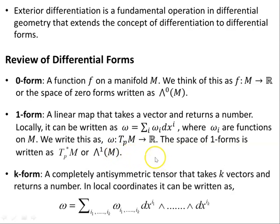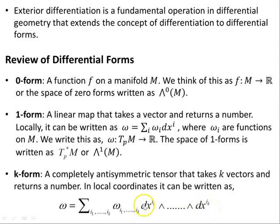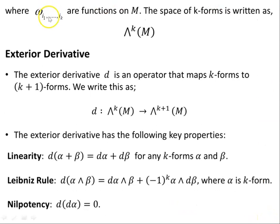A K form is a completely anti-symmetric tensor that takes K vectors and returns a number. Just as one forms took a single vector, two forms take two vectors, three forms take three vectors. In local coordinates, a K form can be written as omega equals sigma i1 to iK, of omega i1 to iK, dx i1 wedge ... wedge dx iK. A two form will have dx i1 wedge dx i2, and so on. The omega i1 to iK are functions on M, and the space of K forms is written as capital lambda K of the manifold M.